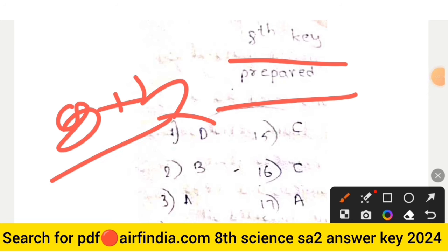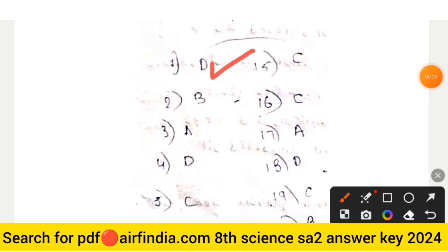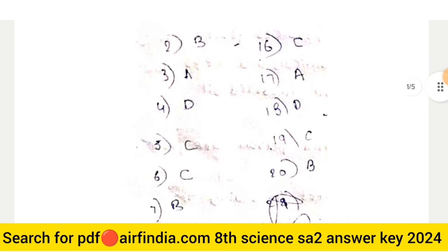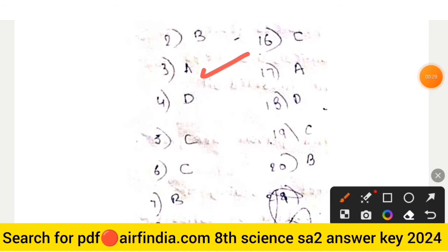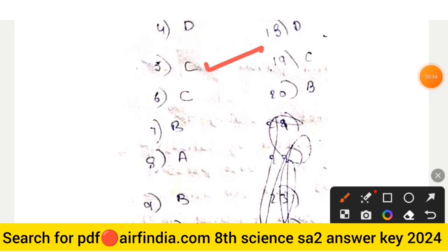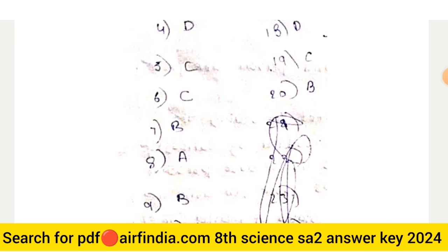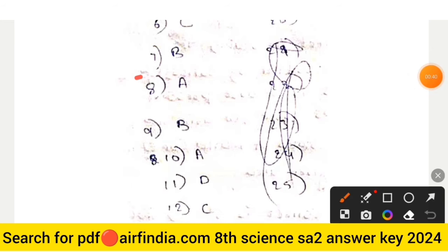Question number 1: right answer is option D. Question number 2: right answer is option B. Question number 3: right answer is option A. Question number 4: right answer is option D. Question number 5: right answer is option C. Question number 6: right answer is option C. Question number 7: right answer is option B.